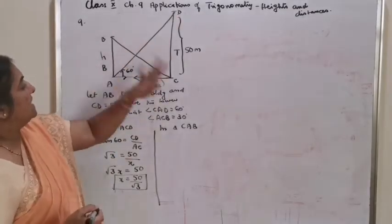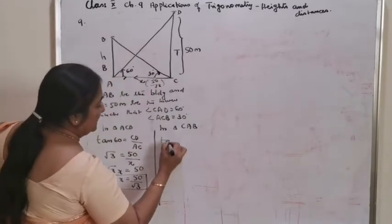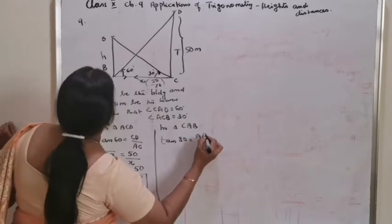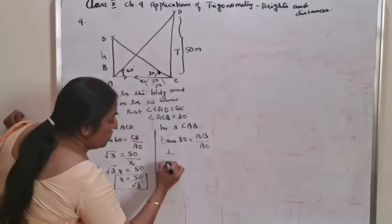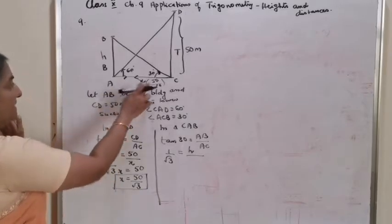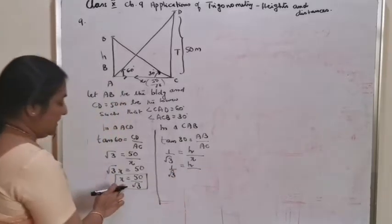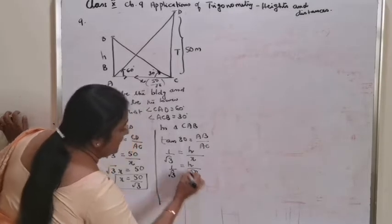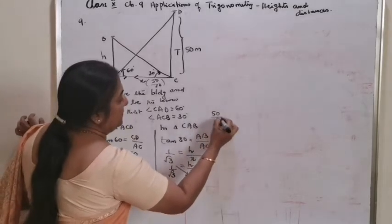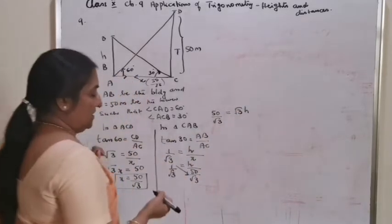Tan 60 is root 3, equals CD length 50 by AC length X. Root 3 into X equals 50, so X equals 50 divided by root 3. We can use the value of X in the next triangle. In triangle CAB, the angle ACB is 30 degrees. Tan 30 equals AB by AC. Tan 30 value is 1 by root 3, equals H by X. Replace X by 50 by root 3.